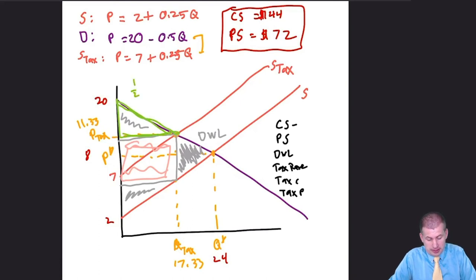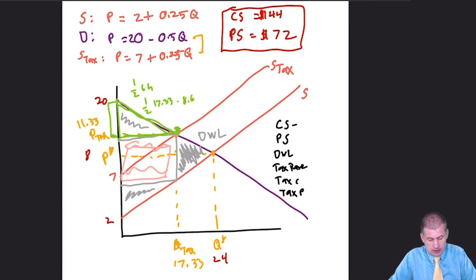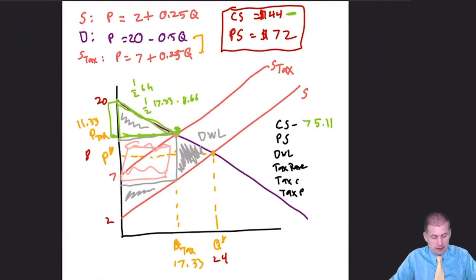For new consumer surplus: area = 1/2 × base × height. The base goes from 0 to 17.33, so base = 17.33. The height goes from 11.33 up to 20, so height = 8.667. Calculating 1/2 × 17.33 × 8.667 = $75.11. That is a big drop from $144 before the tax — the tax ate up a large portion of the consumer surplus.